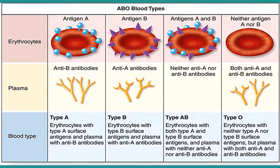Antigens are molecules capable of stimulating an immune response. Each antigen has distinct surface features or epitopes, resulting in specific responses. Antibodies, or immunoglobulins, are Y-shaped proteins produced by B cells of the immune system in response to exposure to antigens. The immune system forms antibodies against whichever ABO blood group antigens are not found on the individual's red blood cells. Thus, a group A individual will have anti-B antibodies and a group B individual will have anti-A antibodies in their blood plasma.